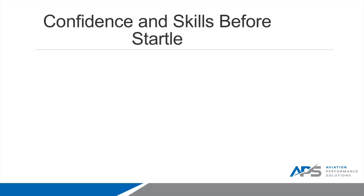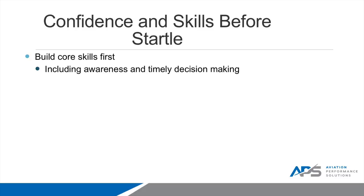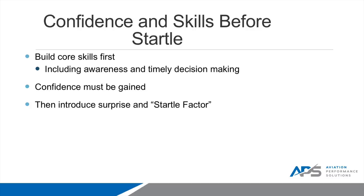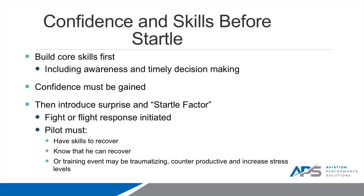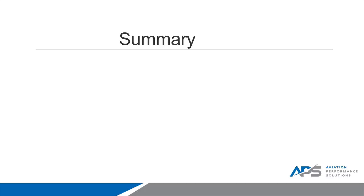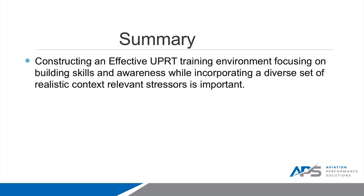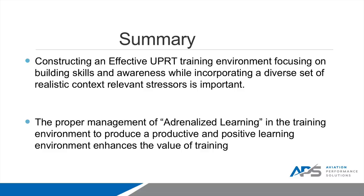Confidence and skills are very important before startle is introduced. Build core skills first, including awareness and timely decision-making. Confidence must be gained, then introduce surprise and startle factor. At that point, the fight-or-flight response is initiated. The pilot must have the skills to recover and know that they can recover, or the training event may be traumatizing — and that must be avoided, as it is counterproductive and increases stress levels inappropriately. To summarize: constructing an effective UPRT training environment focuses on building skills and awareness while incorporating a diverse set of realistic, context-relevant stressors. The proper management of adrenalized learning in the training environment produces a productive and positive learning environment that enhances the value of training.